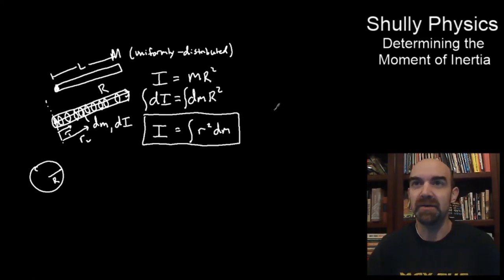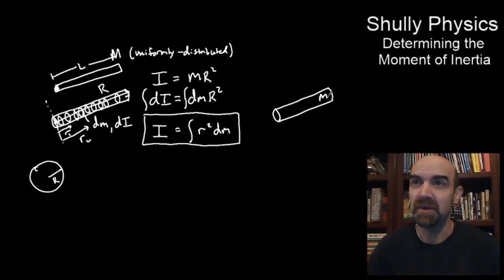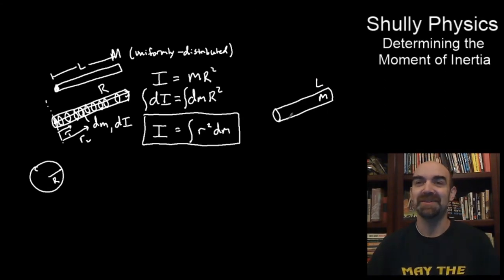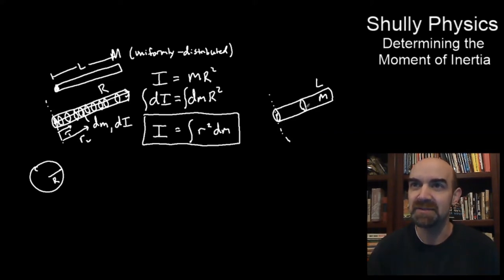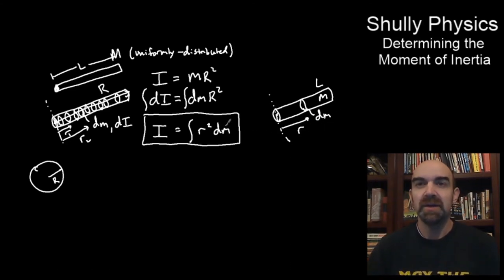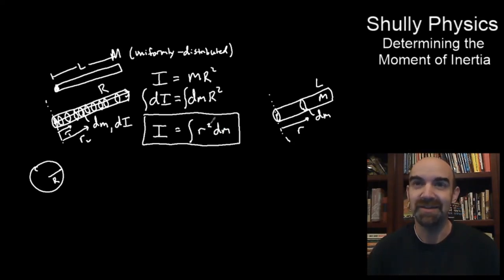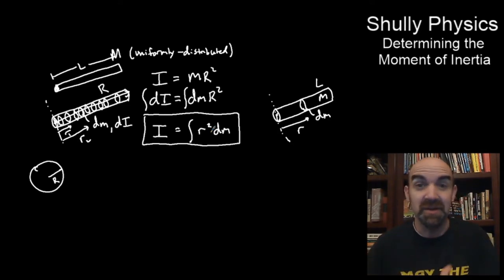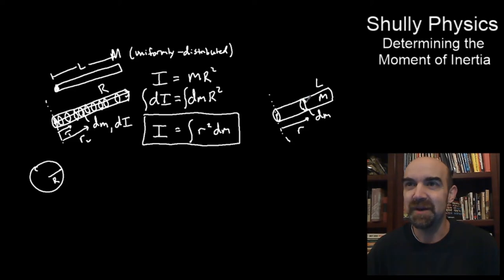So let's apply it to the rod. Where does that one-third ML squared for the rod come from? This rod has mass M and length L. We're going to focus on one little slice dM located at a distance r. When using this expression, the quirkiest part is: what the heck is dM? We need to put dM in terms of a little piece dr. This slice has a tiny tiny width, and we can call it little tiny width dr.